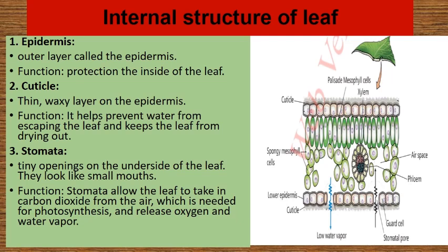3. Stomata — tiny openings on the underside of the leaf; they look like small mouths. Their function is to allow the leaf to take in carbon dioxide from the air, which is needed for photosynthesis, and to release oxygen and water vapor. Here is a figure showing the internal structure of the leaf in transverse section.